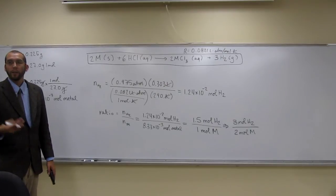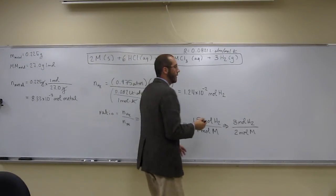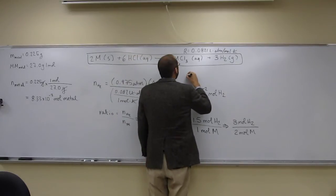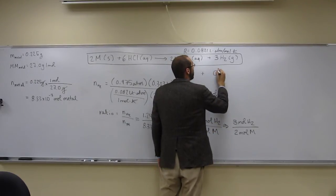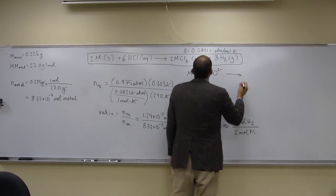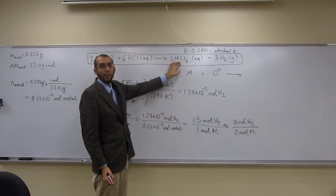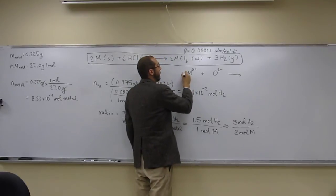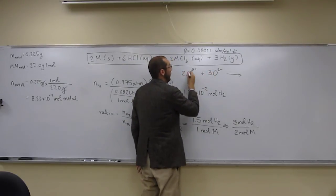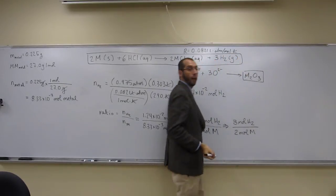Now we need to find the oxide and sulfate of this metal. From the reaction equation, we can see the metal has a +3 charge. Oxygen has a charge of −2, so to balance +3 and −2, we need 2 metal ions and 3 oxygen ions. The formula for the oxide is M₂O₃.